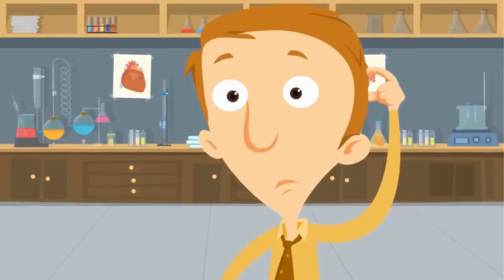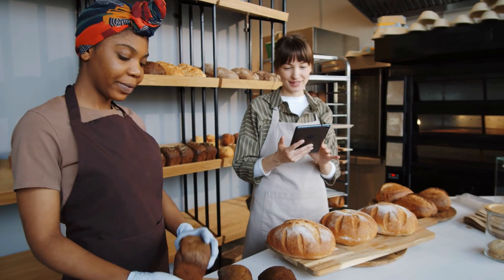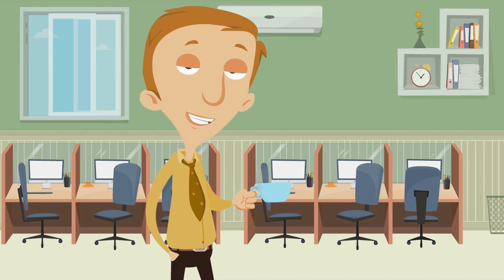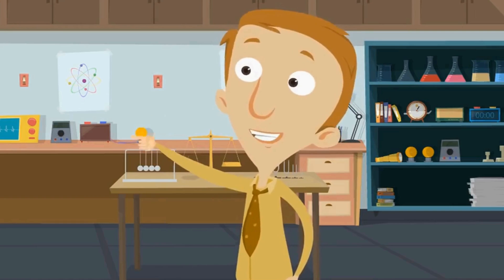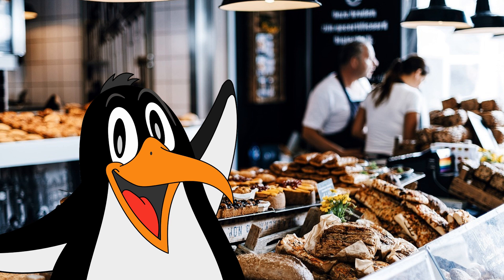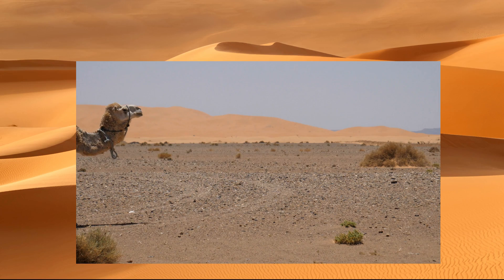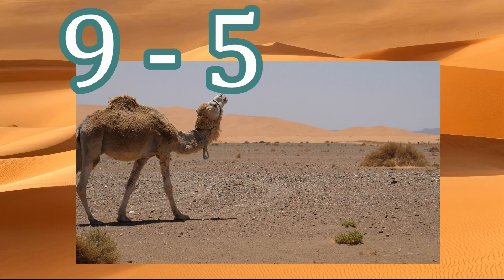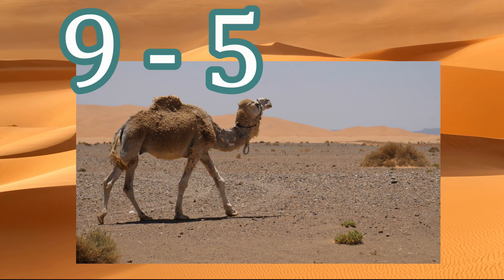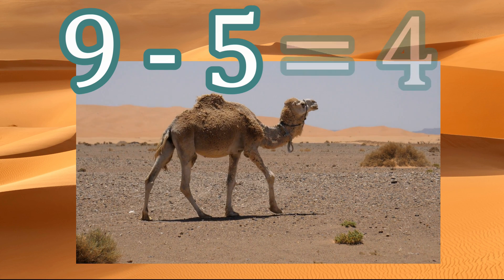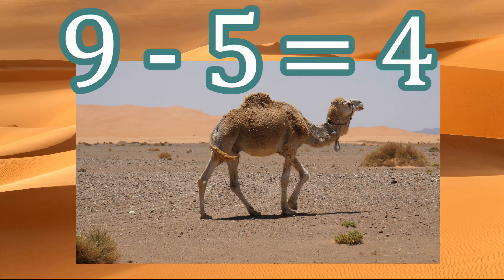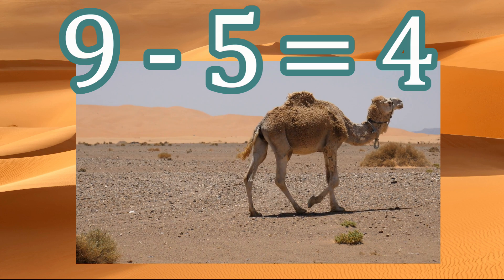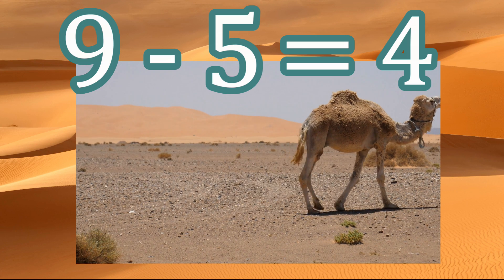Maybe they're going to the bakery we were just looking at. I mean, that would be cool, but come on — penguins don't go to bakeries. Except maybe this penguin. All right, let's try nine minus five. What is nine minus five? Four. Nine minus five equals four. Wow, you are doing great.